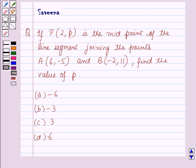find the value of P. The options are option A: -6, option B: -3, option C: 3, and option D: 6.